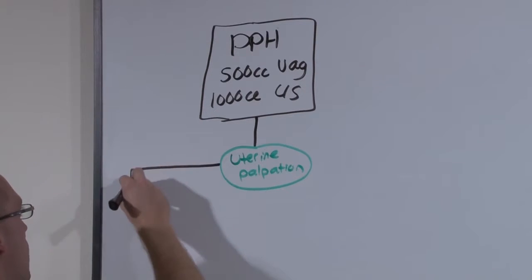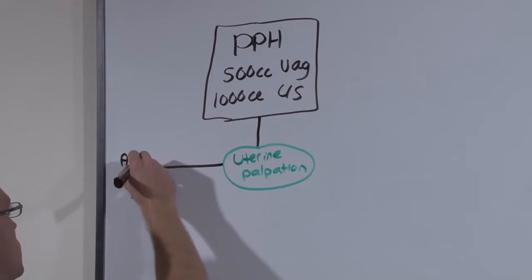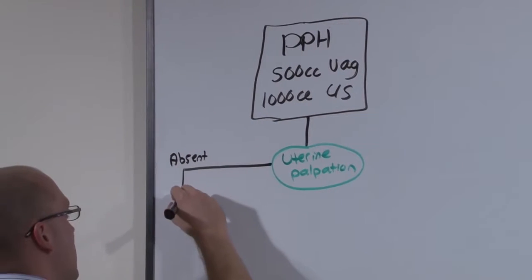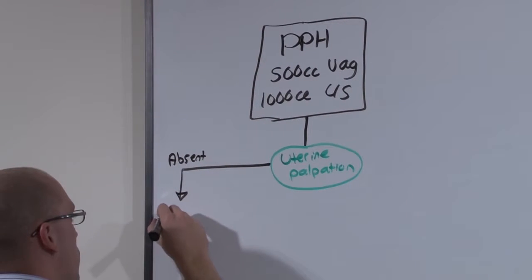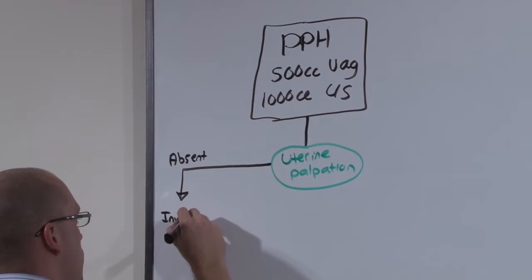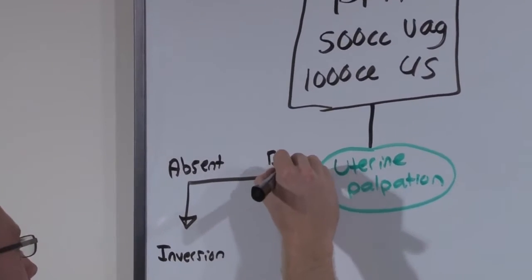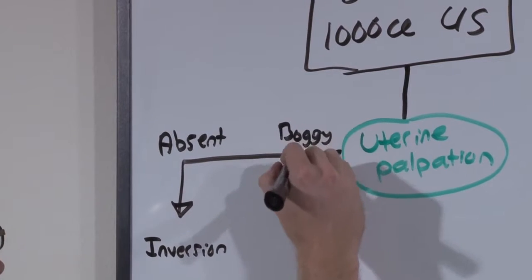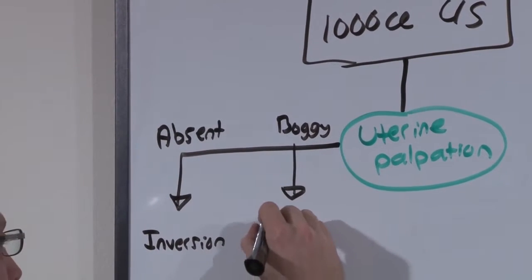If you cannot palpate the uterus, that is it is absent, it is likely to be uterine inversion. If it is boggy, big and soft, it is probably atony.